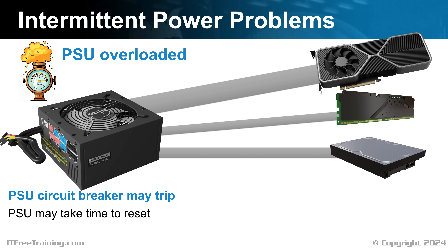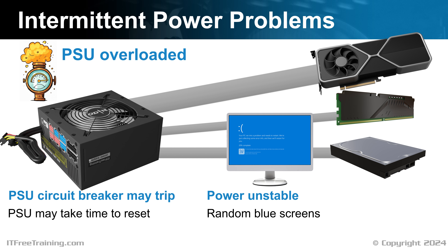If the circuit breaker does not trip, the power output from the power supply may become unstable — essentially, the output is above what it is rated at, so it has trouble keeping power stable. When this occurs, you may get hardware-related blue screen stop errors. It can be hard to determine if these are related to the power supply, because there will generally be different hardware errors each time. So if you see a lot of random stop errors that seem hardware-related, it could be that your power supply is overloaded.